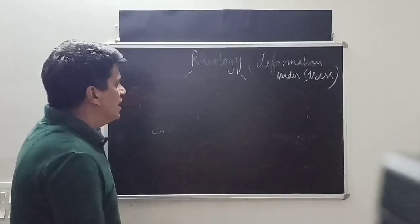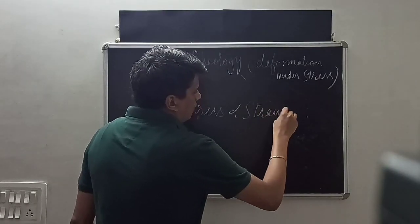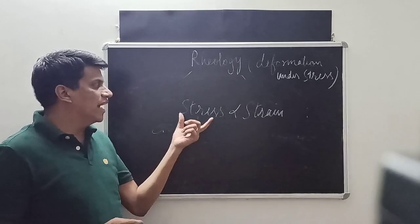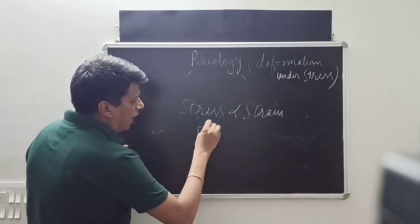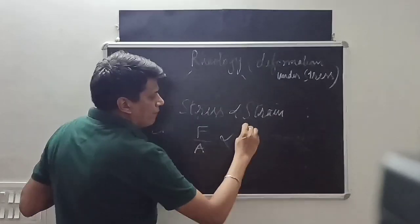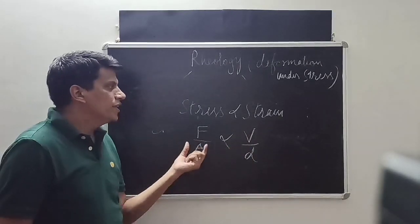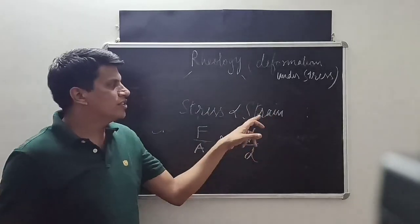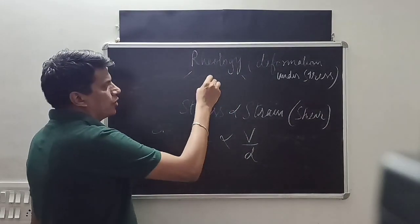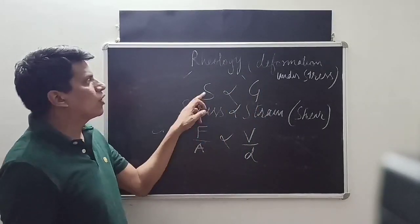Newton's law of viscosity states that stress is proportional to strain. This law is for fluids. Stress is the force applied per unit area, and strain is velocity per unit distance, also called velocity gradient. Strain is also called shear rate or rate of shear. Stress is denoted by S and strain by G.